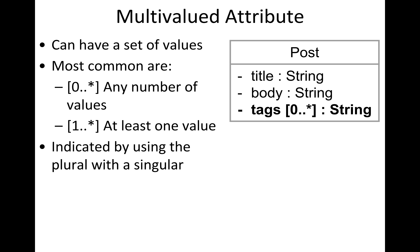Multivalued attributes — some attributes might have multiple values, such as arrays. For example, a post might have different tags associated with it, describing the various topics of that post. We can use the same multiplicity brackets to say there could be any number or at least one value for the tags, indicated using plural nouns — like 'tags' with an S at the end.